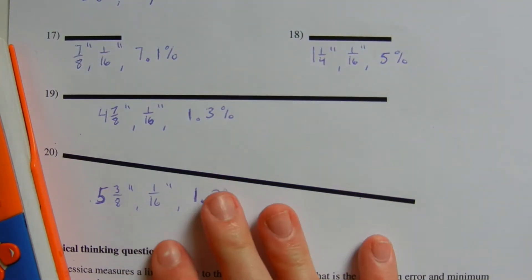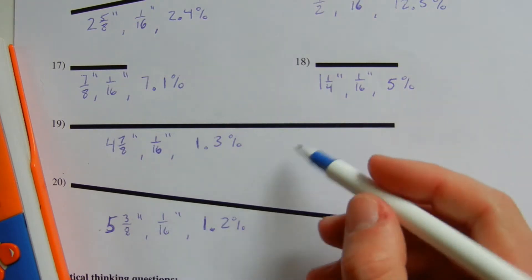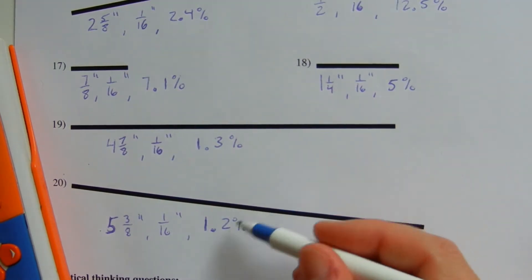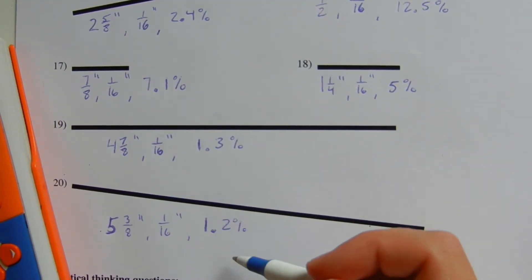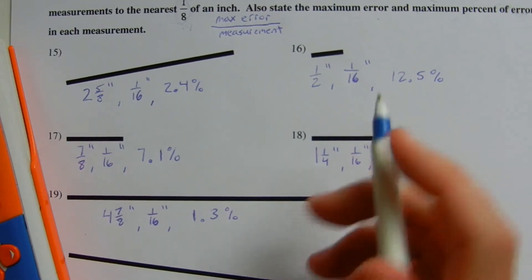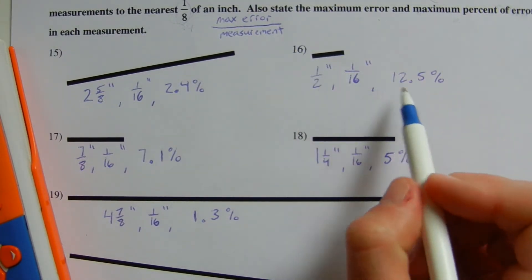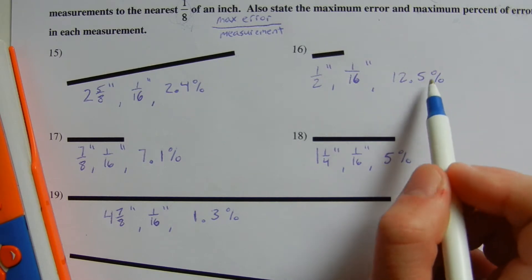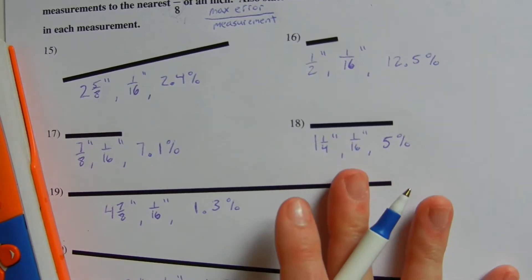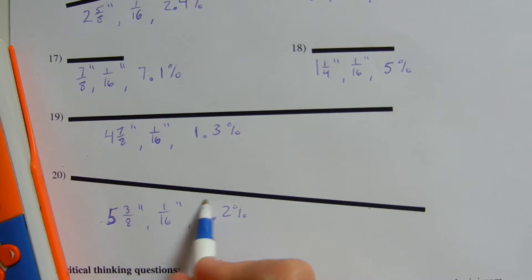Something to note: as my lines are getting longer, my maximum percent of error is getting smaller. The shortest line, number 16 at half an inch, had a 12.5 percent error, but the longest line, number 20, had only 1.2 percent error. Why do you think that is? Leave it in the comments below.